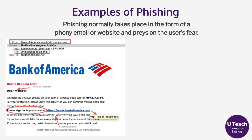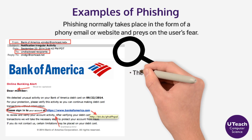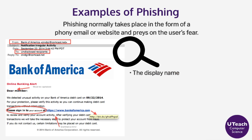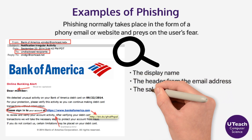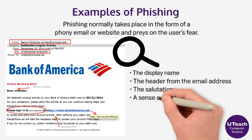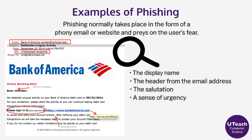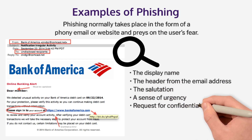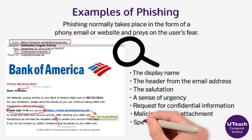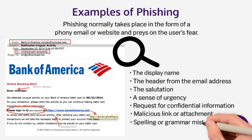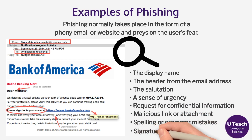Look closely at the example phishing email from Bank of America. Do any of the following seem suspicious to you? The display name, the header from the email address, the salutation, a sense of urgency, request for confidential information, malicious link or attachment, spelling or grammar mistakes, and the signature line.